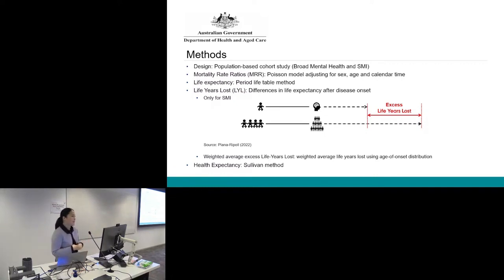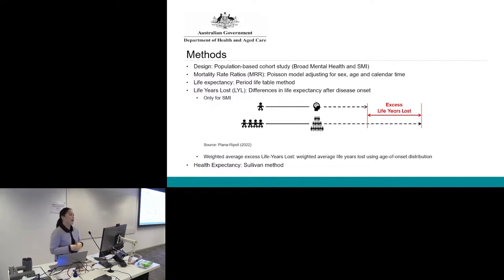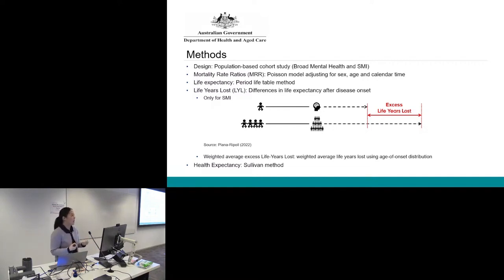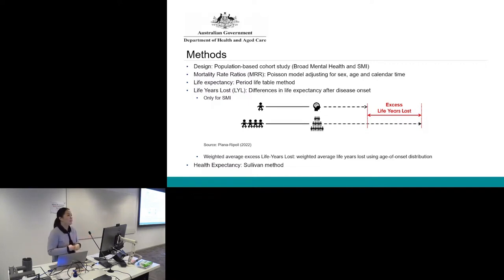We've added the health expectancy metric because all the other metrics are about quantity of life. We also see it's important when looking at this cohort to understand quality of life, so we're adding that perspective to this study.